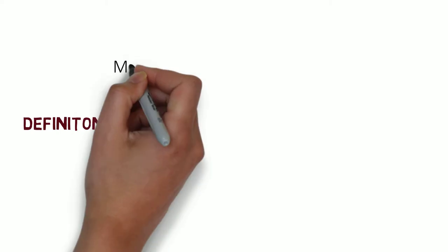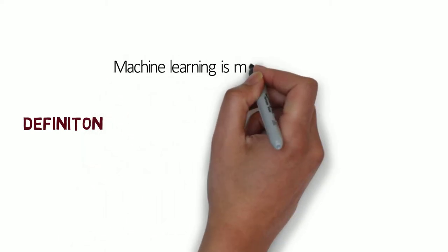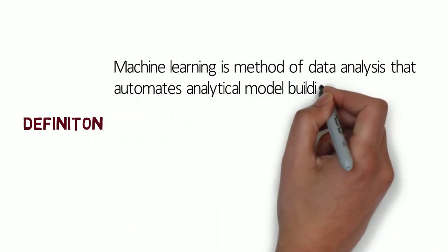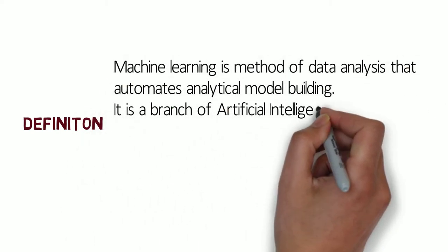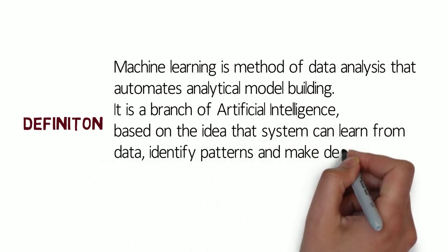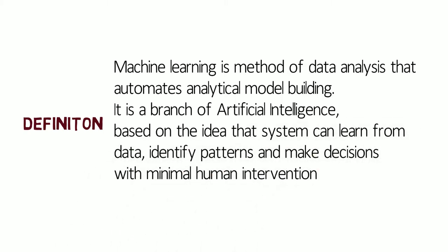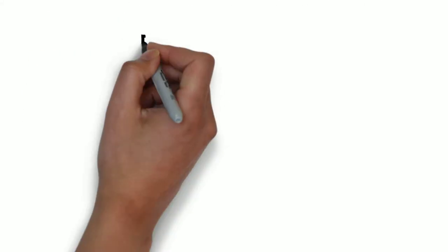Let's look at the definition of machine learning. Machine learning is a method of data analysis that automates analytical model building. It is a branch of artificial intelligence based on the idea that systems can learn from data, identify patterns, and make decisions with minimal human intervention.